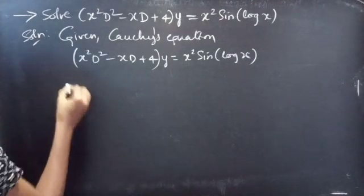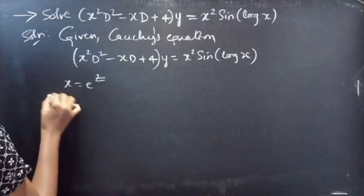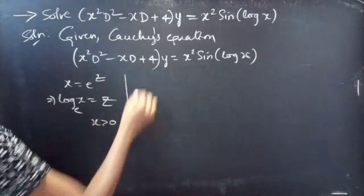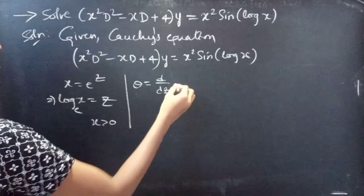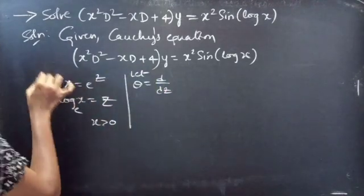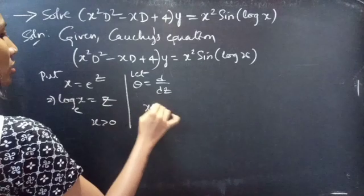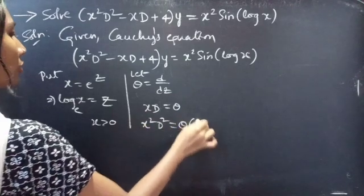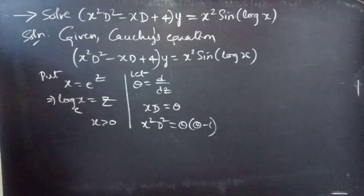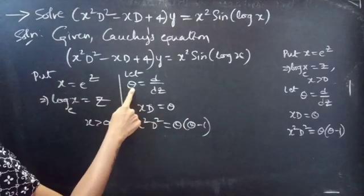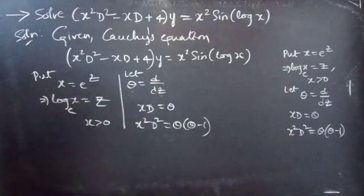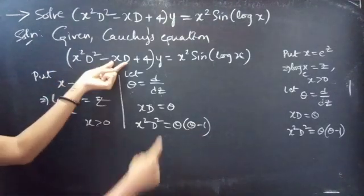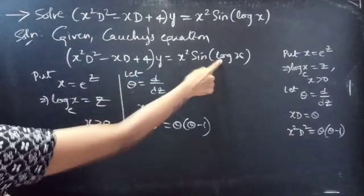We do this simply by making the substitution x equals e to the z, so log x equals z for x greater than 0, and theta equals d/dz. We use x squared D squared equals theta times (theta minus 1), where theta is the differential operator whose independent variable is z. Now let's replace x squared D squared by theta(theta minus 1), x D by theta, x by e to the z, and log x by z.